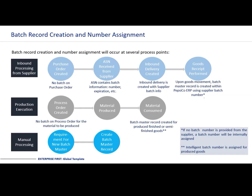Batch record creation and number assignment. This slide explains the inbound processing from supplier. A purchase order is created with no batch. An ASN is received from the supplier, which will have a batch and all the relevant information — expiry date, quantity, product. We'll then get an inbound delivery into the sites. A goods receipt is performed, and upon goods receipt, a batch master record is created within PepsiCo. If no batch number is provided from the supplier, a batch number will be internally assigned at the point of goods receipt and inbound.